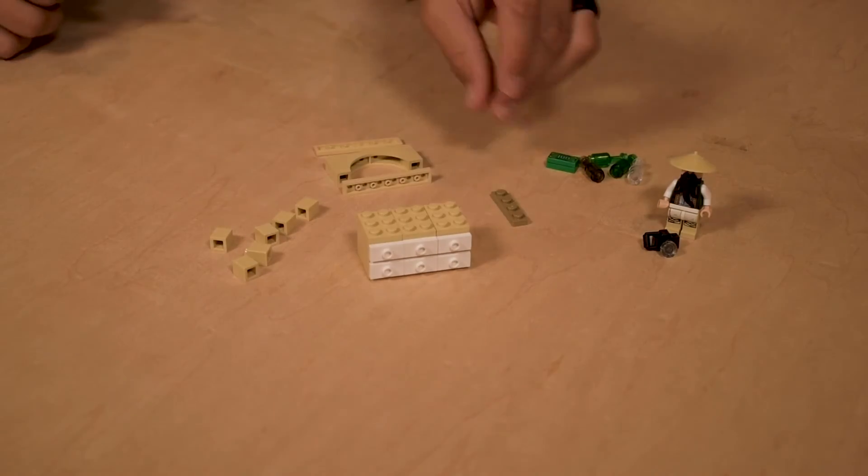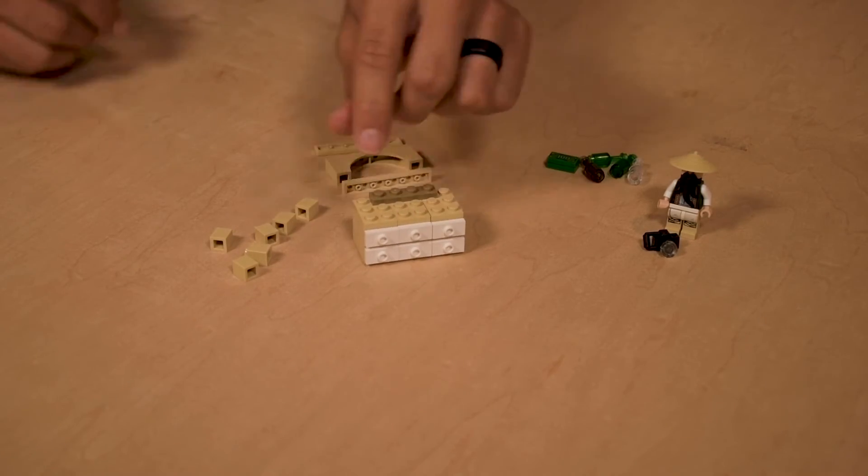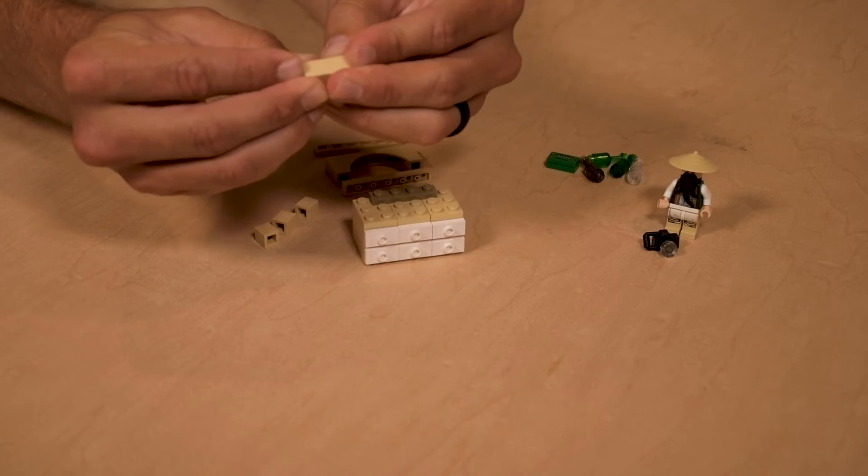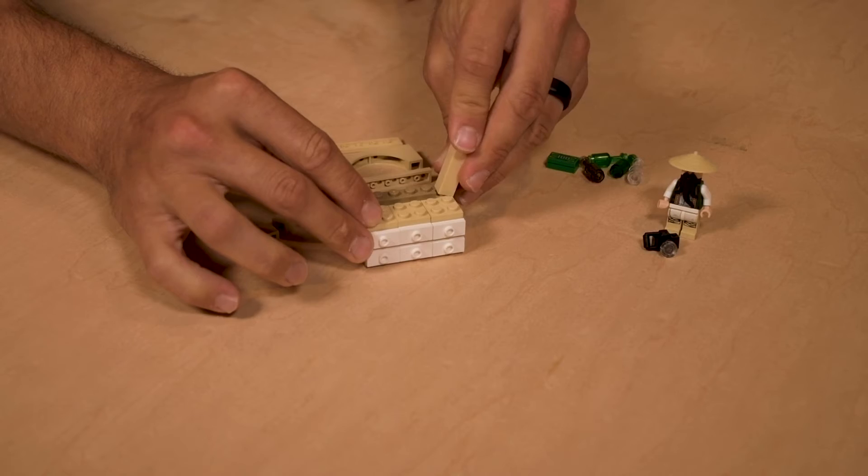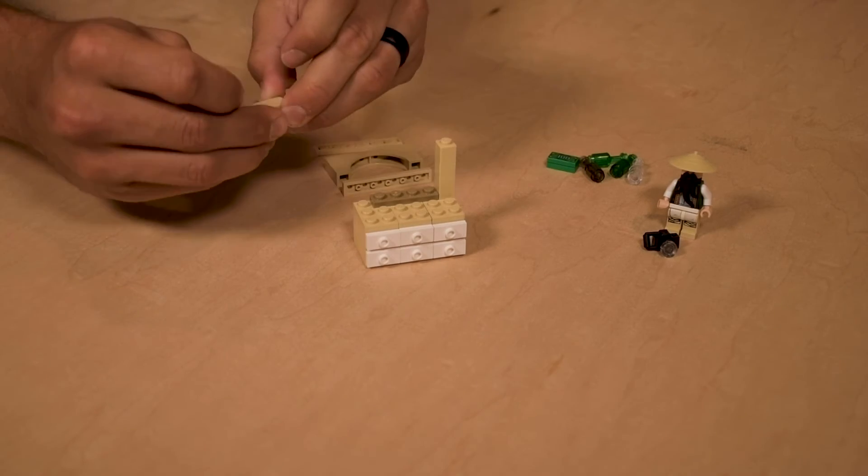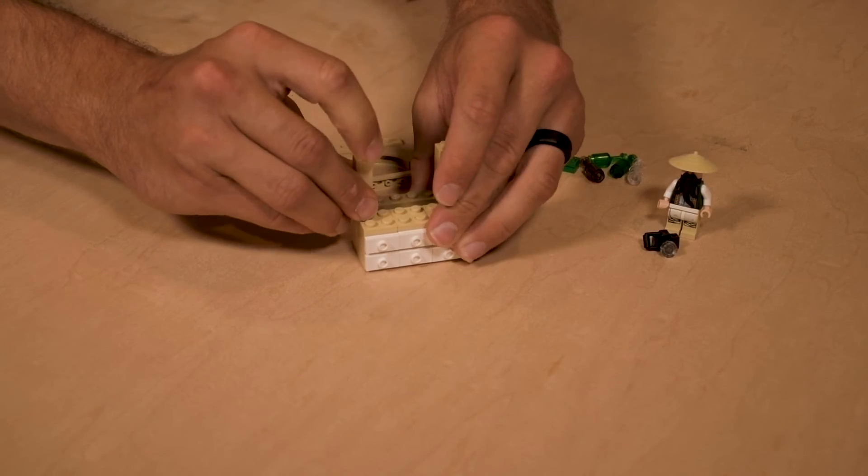Then what we want to do is I have a little different color piece here, I'm going to toss that there. Then we're going to take three one by ones and toss those there. Then we're going to take three more one by ones and, you guessed it, toss them on this side.